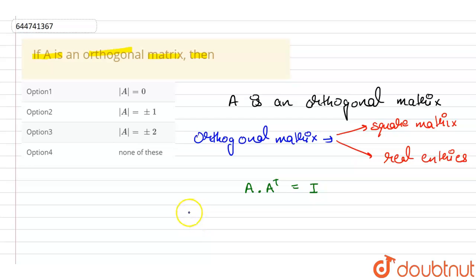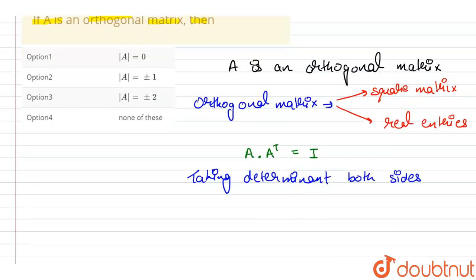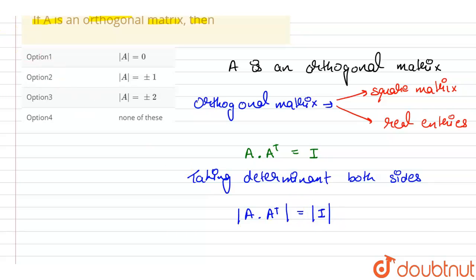Now, taking the determinant of both sides: the determinant of A into A transpose will be equal to the determinant of I.